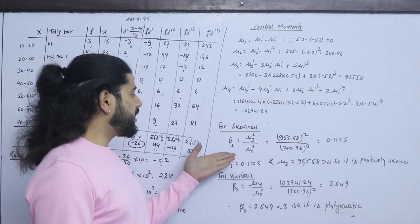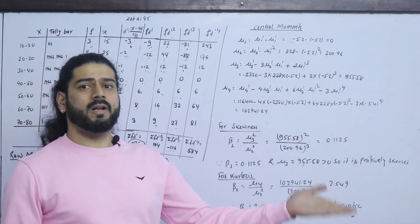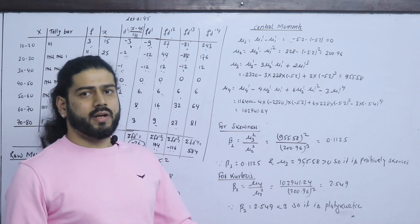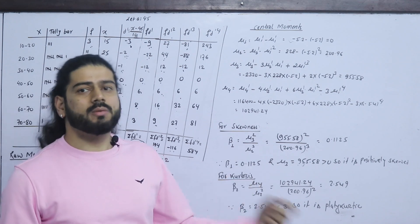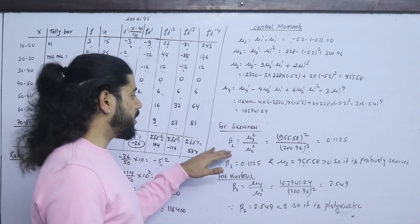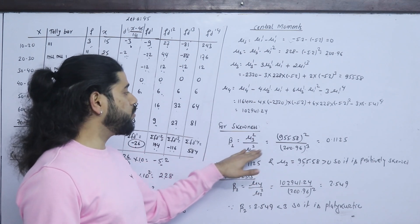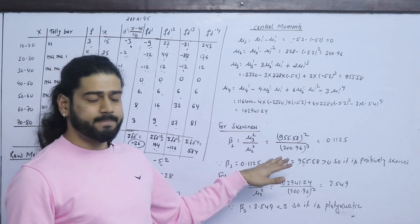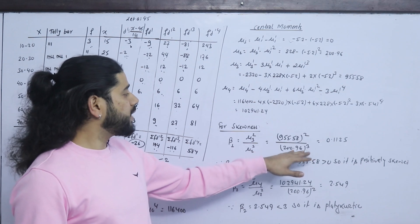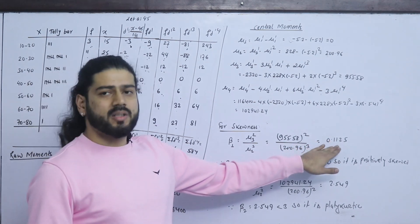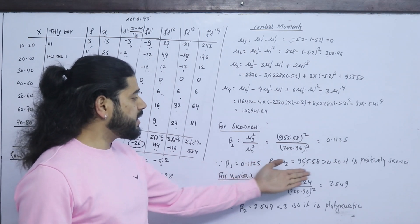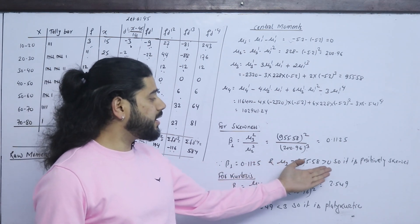This is also not the final count. On the same page, I have a question for gamma 1. With gamma 1, μ3 upon μ2 to the power 3/2. Taking it to the cube: 0.112. My point of error is 0. μ3 is 95.58, which is greater than 0.